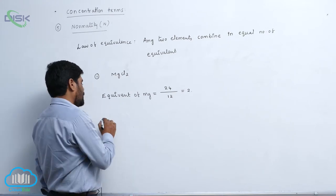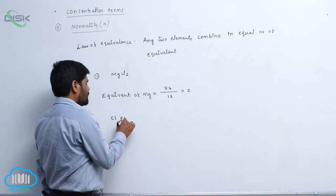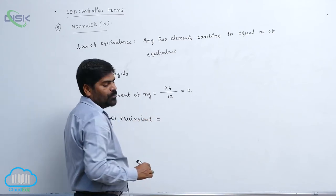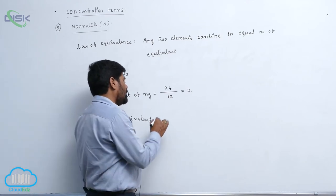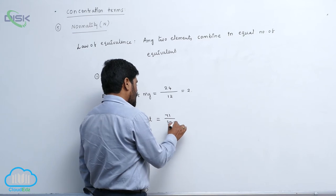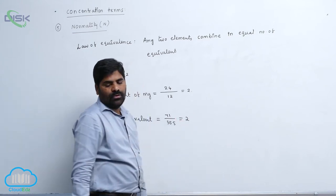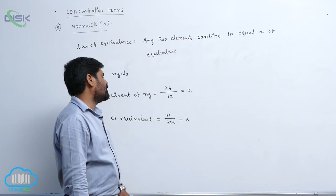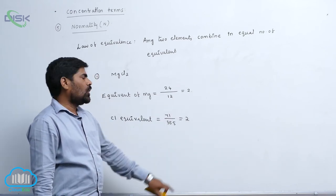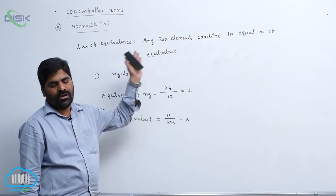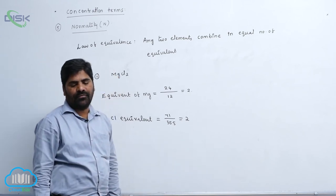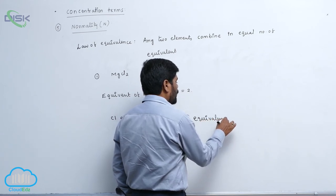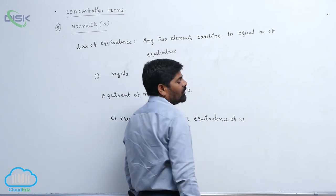In the same way, chlorine equivalents equals to 71 divided by 35.5, which also becomes 2. Therefore, 2 equivalents of Cl minus. So 2 equivalents of magnesium and 2 equivalents of chlorine are combined, according to the law of equivalence.